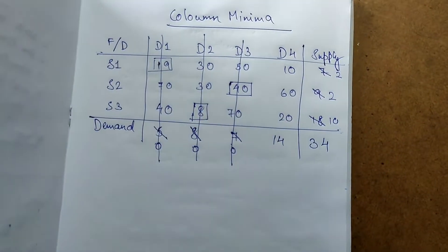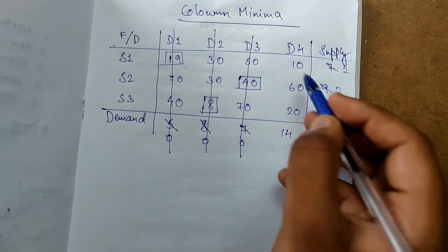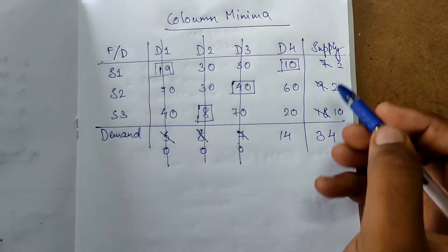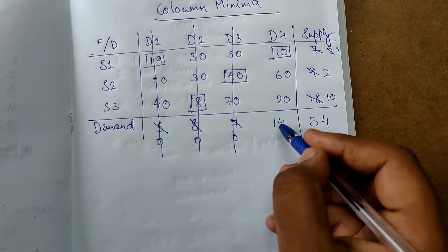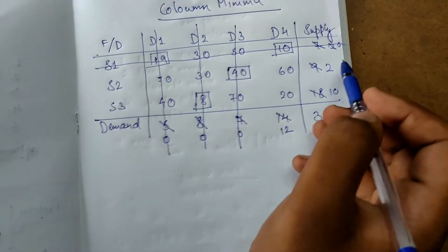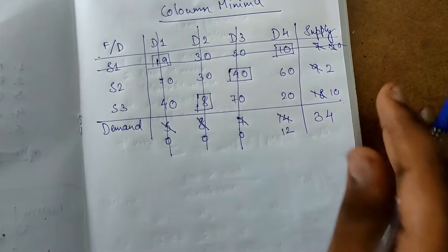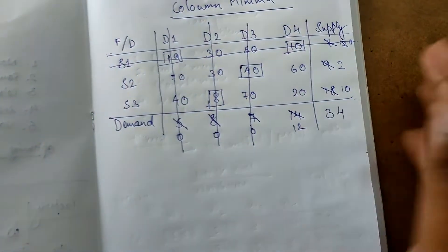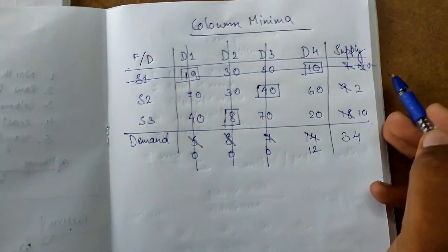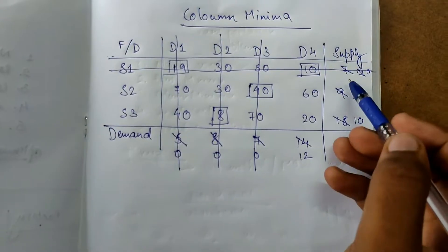Next is this one. 10 is the least. We will highlight 10, 2 and 14. 2 minus 2 is 0 and 14 minus 2 is 12. Attraction will be this side, so we will strike off this row. If you are confused here, column strike off and the attraction at 0, where 0 is. This side supply 0 but we strike off.